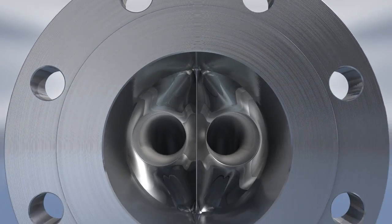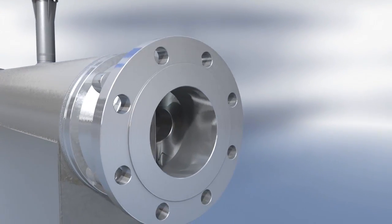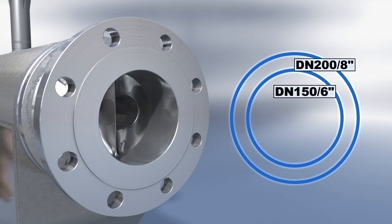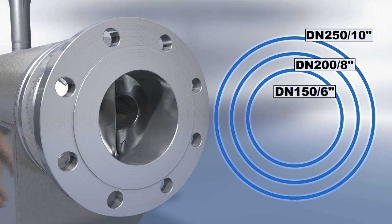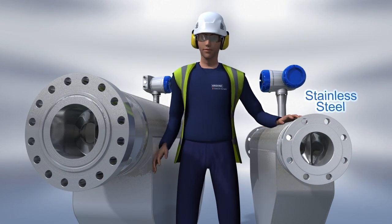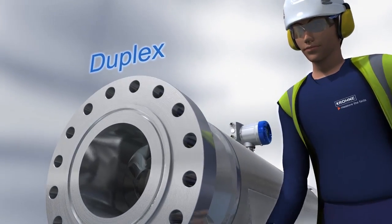The OptiMass 6400 is a twin bent tube design. Large line sizes available are S150, S200, and S250. The meter is available in standard installation lengths in stainless steel and duplex. The duplex high pressure variants are rated at 200 bar, 2900 psi.